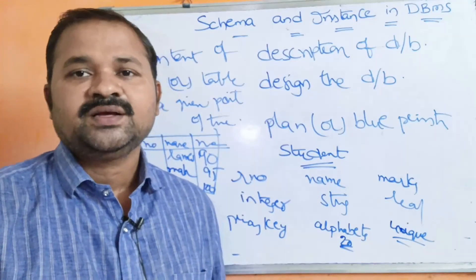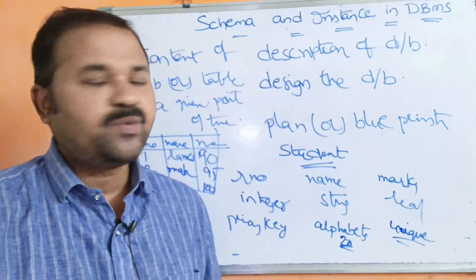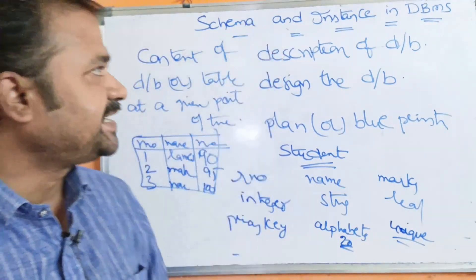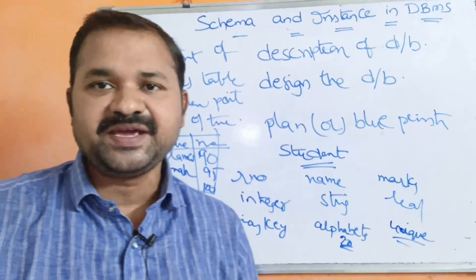So that is what instance means — the content of the database or table at a given point of time. This is about instance and schema in DBMS.